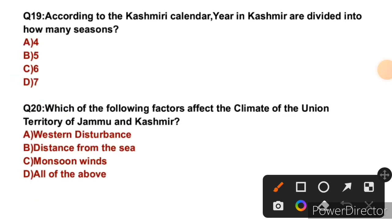Question 19: According to the Kashmiri calendar, the year in Kashmir is divided into how many seasons? According to the Kashmiri calendar, the year is divided into six seasons. So the right answer is C — six.